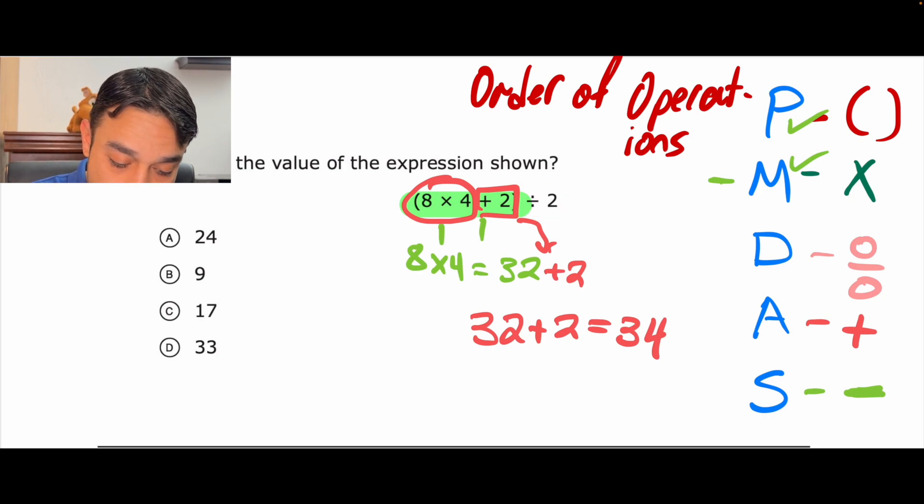So, what we have left is divided by 2. So, whatever our answer was inside of those parentheses, now we're going to divide that by 2. Since our only operation left, that's our last step. So, I'm going to have a little change of color. So, I'm going to go with purple.